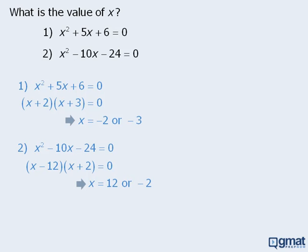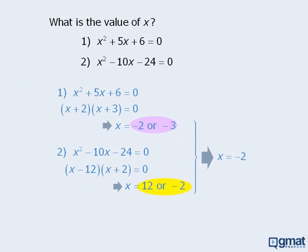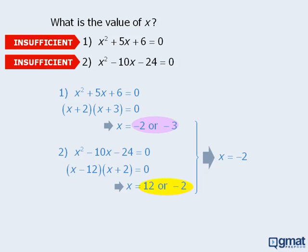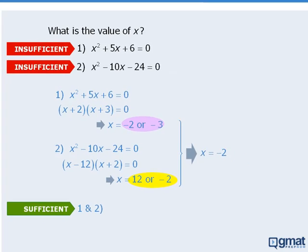Notice that the two statements no longer contradict each other. Statement 1 tells us that x must equal negative 2 or negative 3, and statement 2 tells us that x must equal 12 or negative 2. When we combine both statements, we can see that x must equal negative 2. So statements 1 and 2 alone are each insufficient, but the two statements combined are sufficient, so the answer here is C.